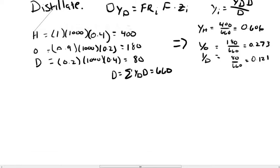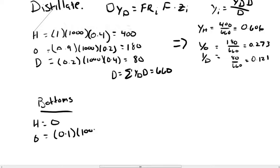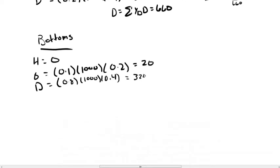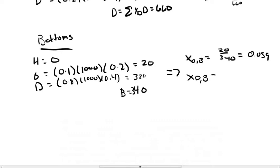The same procedure is done for the bottoms. Heptane is 0, since all heptane is assumed to go into the distillate. For octane, this is the fractional recovery of 0.1 × 1000 × 0.2, giving a flow rate of 20. The same is done for decane. Summing these gives a bottoms flow rate of 340. From these, x_octane in the bottoms is 20/340 ≈ 0.059, and x_decane is 0.941.